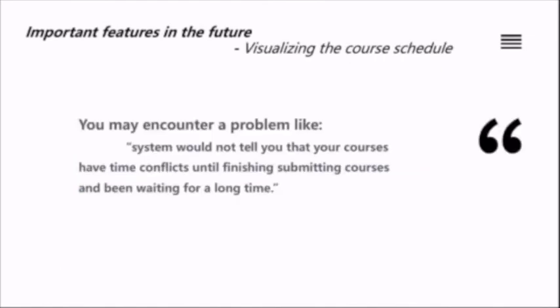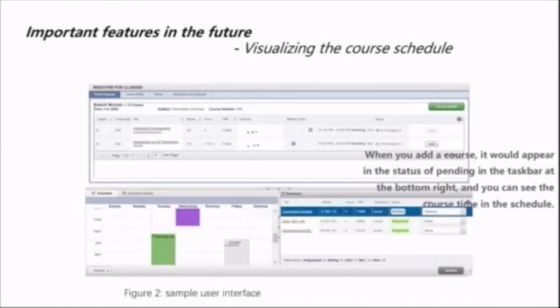For visualizing the course schedule while registering: when registering for courses, users may encounter a problem where the system does not tell them about time conflicts until after submitting and waiting a long time. We hope to improve the user experience from this perspective. In the sample interface, when you add a course, it appears with a pending status in the taskbar at the bottom right and the course time is visible in a schedule view. If any current courses have time conflicts, it warns you immediately.